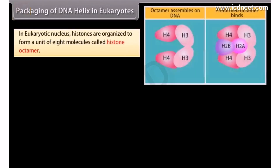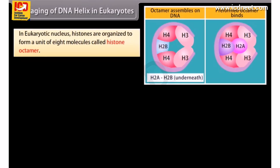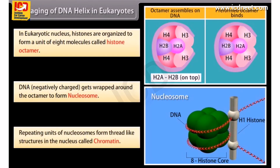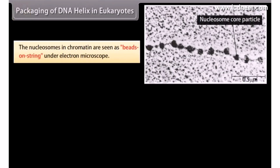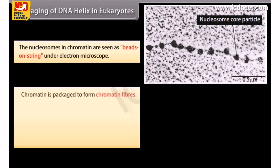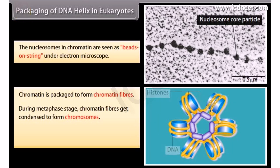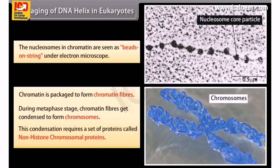Packaging of DNA Helix in Eukaryotes. In the eukaryotic nucleus, histones are organized to form a unit of 8 molecules called a histone octamer. DNA, which is negatively charged, gets wrapped around the octamer to form a nucleosome. Repeating units of nucleosomes form thread-like structures in the nucleus called chromatin. The nucleosomes in chromatin are seen as beads on a string under an electron microscope. Chromatin is packaged to form chromatin fibers. During metaphase stage, chromatin fibers get condensed to form chromosomes. This condensation requires a set of proteins called non-histone chromosomal proteins.